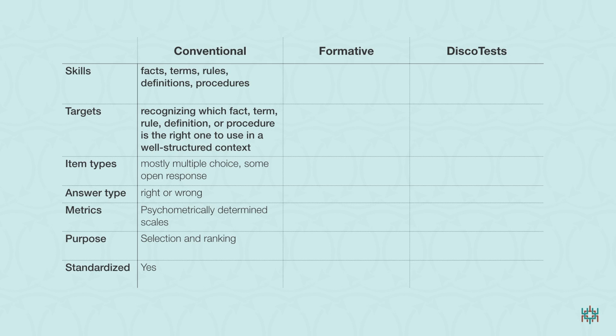Teachers tend to foster shallow learning when tests used to evaluate student progress reward shallow learning. Most standardized tests ask primarily if students recognize which fact, term, rule, definition, or procedure is the right one to use in some well-structured context. When tests reward shallow learning, where's the impetus to foster robust learning supposed to come from? We think the answer lies in alternate forms of assessment that measure and support robust learning.